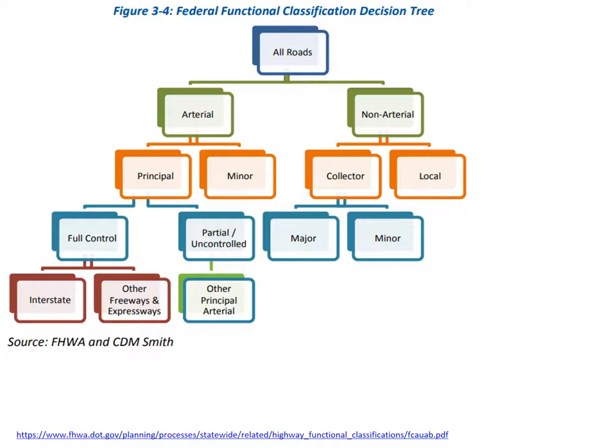Conversely, interstate highways — the highest order of arterials — represent only one or two percent of the miles, but carry approximately 30 percent of travel volumes.